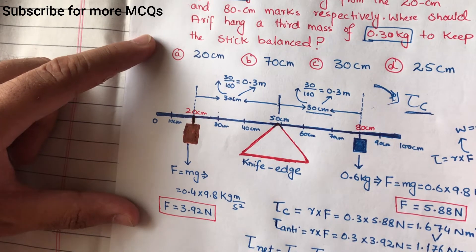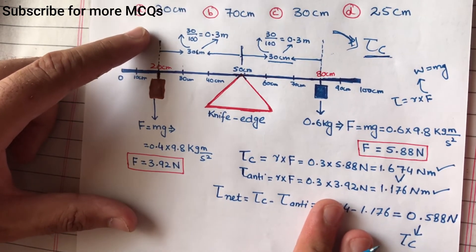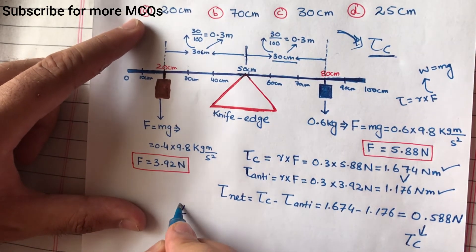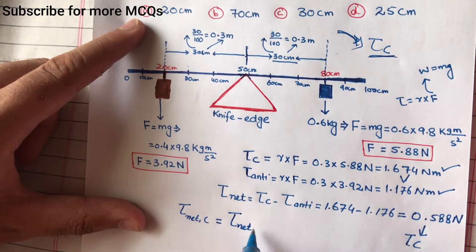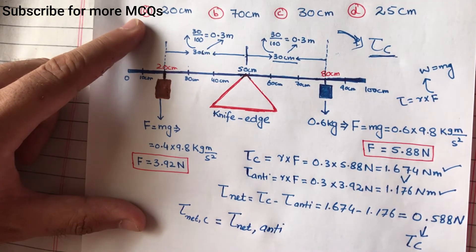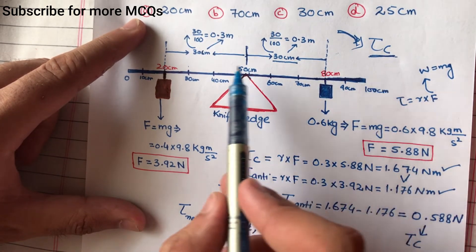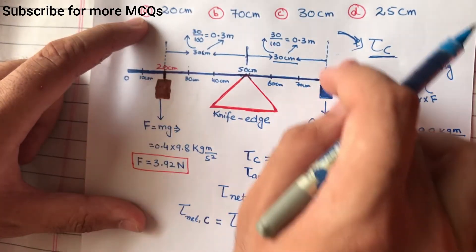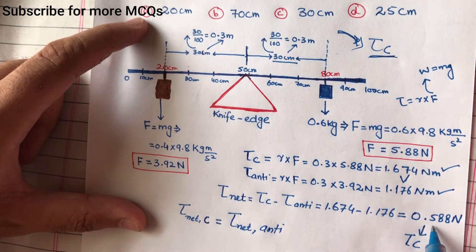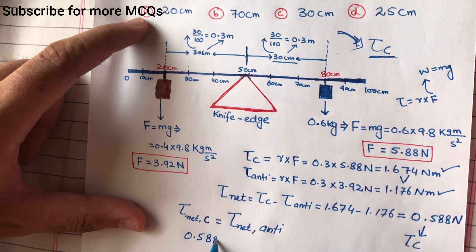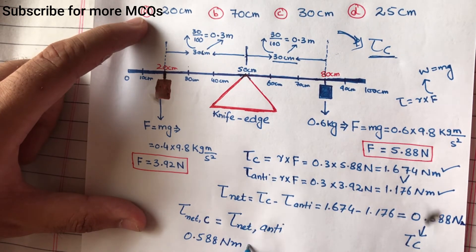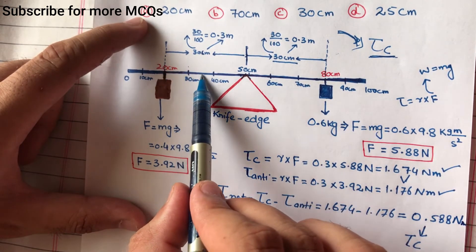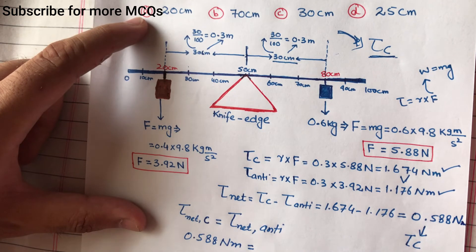Balance condition یہ ہے: net clockwise torque = net anti-clockwise torque۔ Net clockwise torque = 0.588 Newton meter۔ یہ برابر ہو جائے گا r cross F کے۔ Distance r ہم نے معلوم کرنا ہے کہ کونسے distance پر اس mass کو rod کے ساتھ attach کریں۔